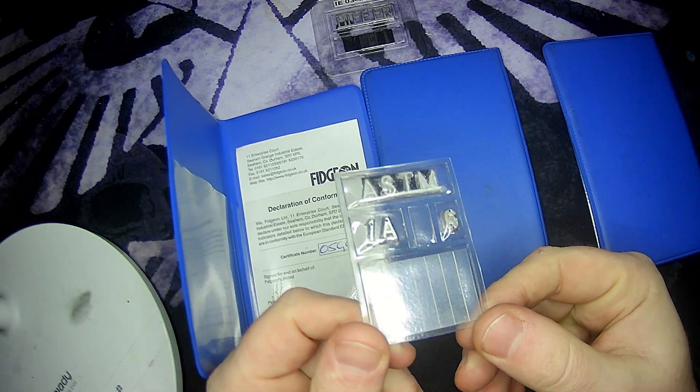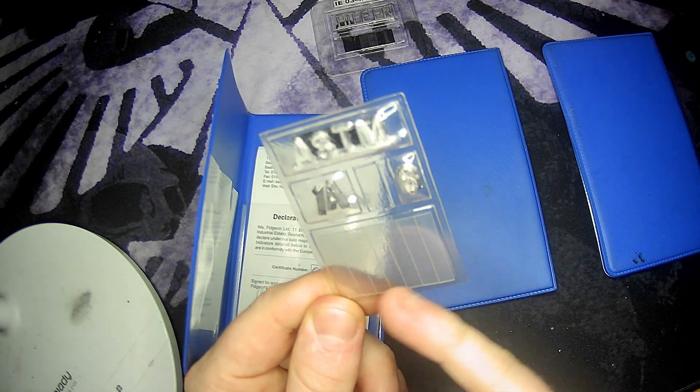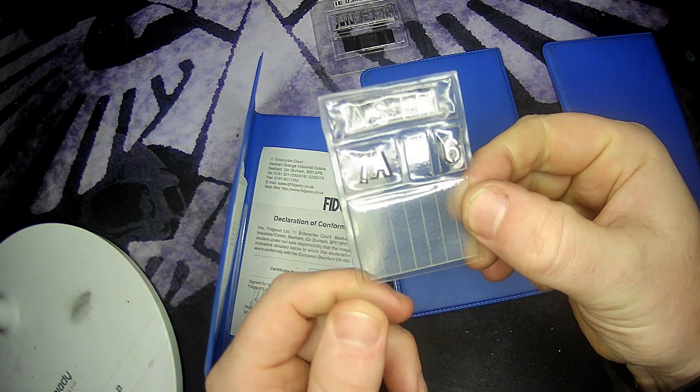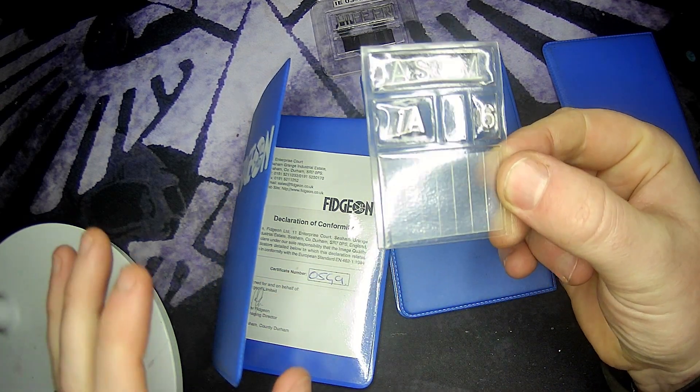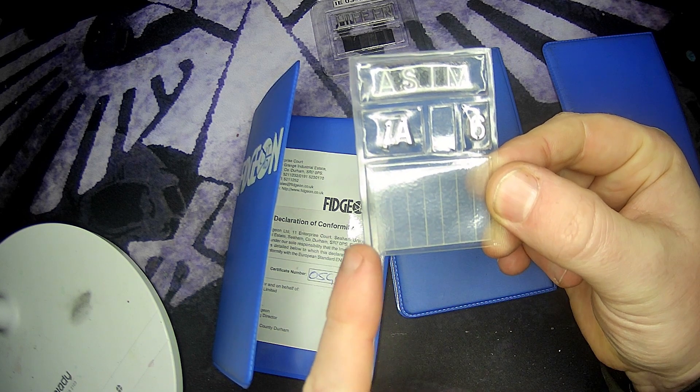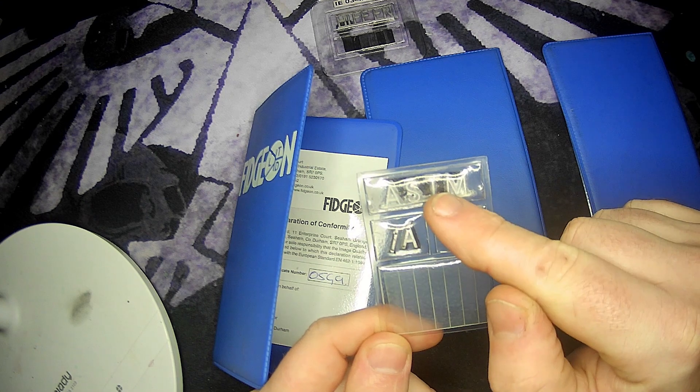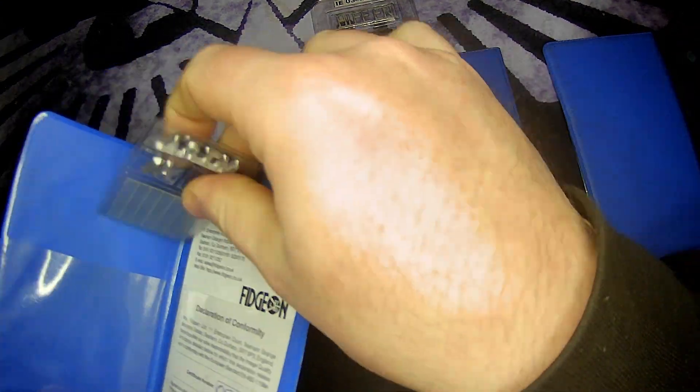This is an ASTM number 6. It basically means that the thickest wire here, the one that's underneath the number, is a wire 6. And then we count down from there and the wires will get thinner. So that's how we identify it. So we've got our standard and our number. So there's one there.